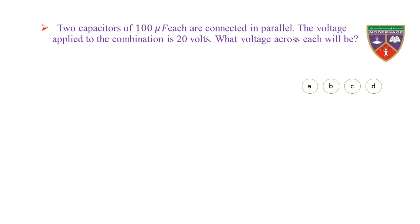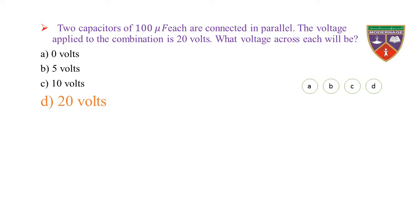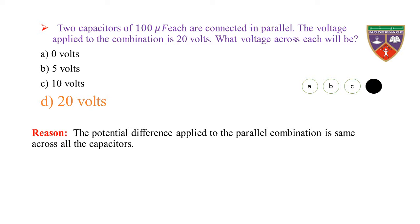Two capacitors of 100 microfarad each are connected in parallel. The voltage applied to the combination is 20 volts. What voltage across each will be? Option A: 0 V, option B: 5 V, option C: 10 V, option D: 20 V. The key is 20 volts; the correct option is D. Reason: The potential difference applied to a parallel combination is the same across all capacitors. Hence, the potential across each capacitor is 20 volts.